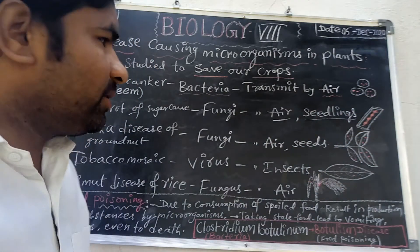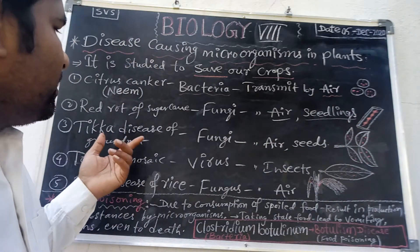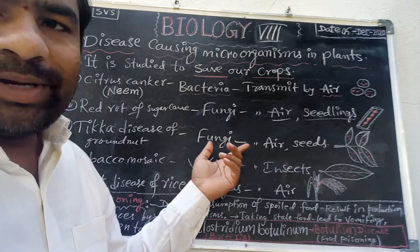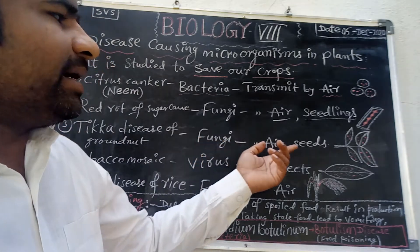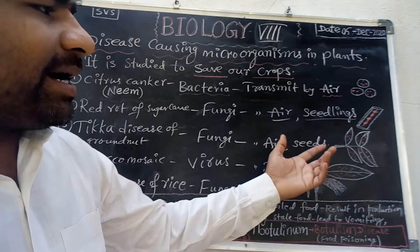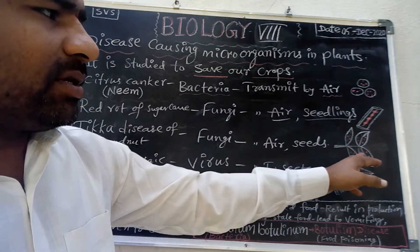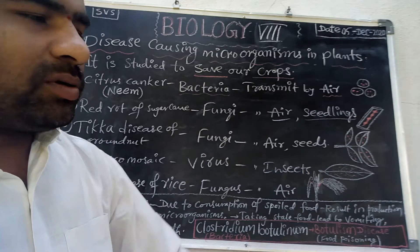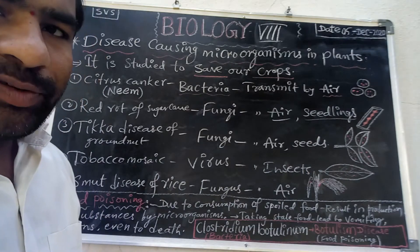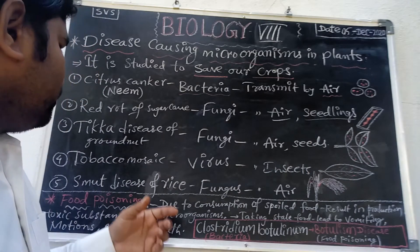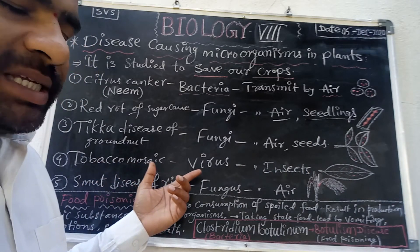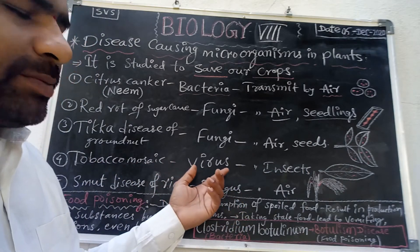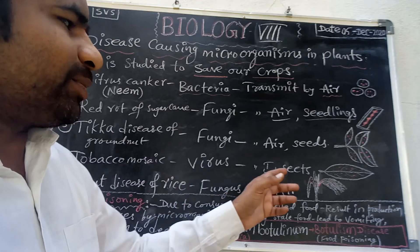Tikka disease of groundnut is caused by fungi and is spread by air and seeds. On the leaves, red dots will be seen. Tobacco mosaic disease is caused by a virus and is spread by insects.